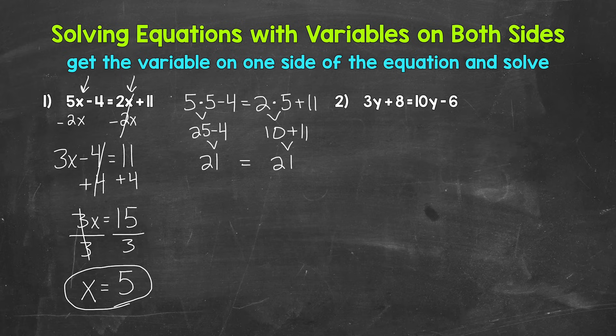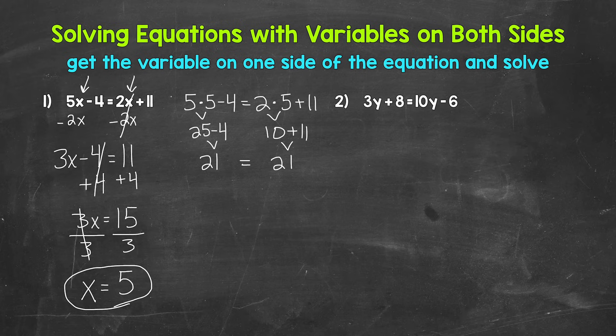Let's move on to number 2, where we have 3y plus 8 equals 10y minus 6. We have the variable y on both sides. We need to get the variable on one side and then solve. We need to decide which side to put the variable on. Like I mentioned earlier, either way will work, but look to avoid negatives. We can do that by getting rid of the one with the coefficient that is smaller in value. We have a 3 and a 10 in front of the variable — 3 is smaller, so let's get rid of the 3y. That's a positive 3y, so the inverse operation is to subtract 3y from the left side.